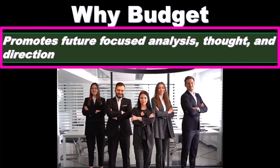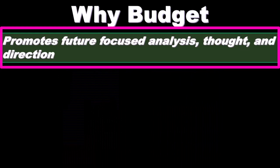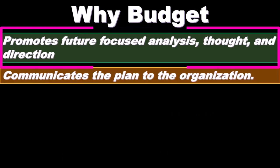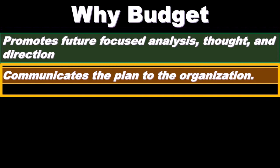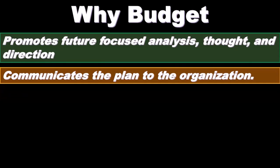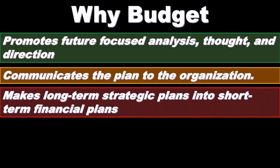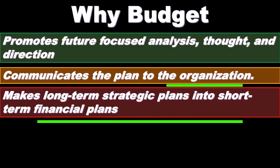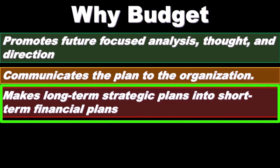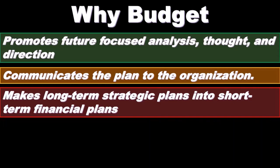If there's any question on day-to-day activities, everybody should have some idea of what to do given the overarching vision, goals, and objectives of the budget. The budget communicates the plan to the organization, so everybody knows what the budget is, how to act within the budgeting process, and what their department is required to do. It also translates long-term strategic plans into short-term financial plans, so upper management communicates the overarching vision step by step.